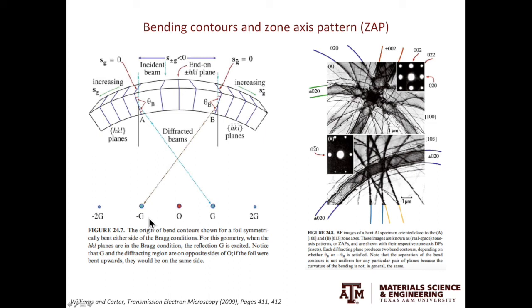Bending contours can offer crystal symmetry information in real space. The zone lines you see here are called real space zone axis patterns or zaps. You can see from the diffraction pattern, it has a two-fold symmetry. This symmetry is also shown by the bending contours. Also at the intersection of the zone lines, you can see a dark patch. And at this patch, the specimen is right on the zone axis.